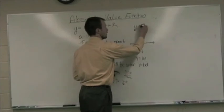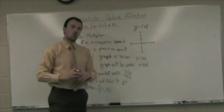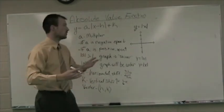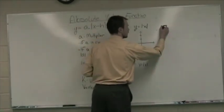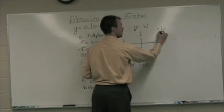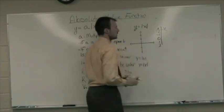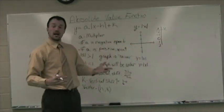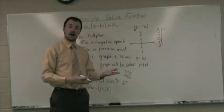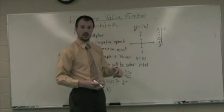Finally, to graph Y equals the absolute value of X, we can create a chart of values. X and Y. And I'm going to go from negative 2, negative 1, 0, 1, 2. I choose the X value and then I go find the Y value. We know that Y equals the absolute value of this X term that I choose.